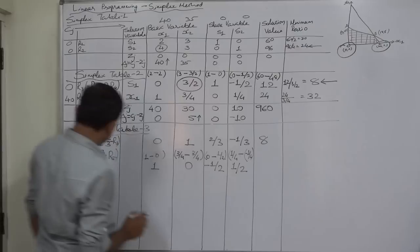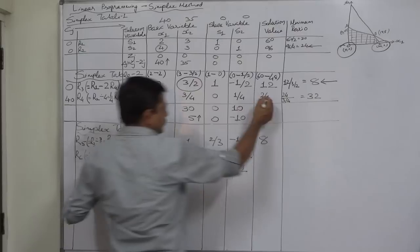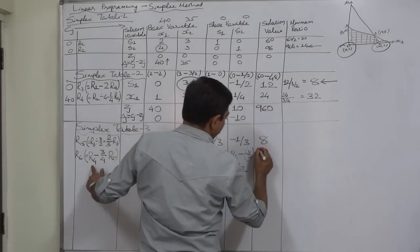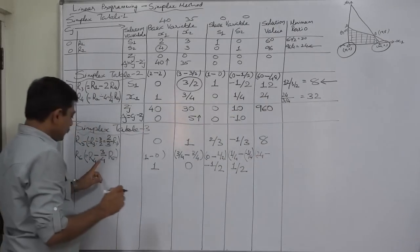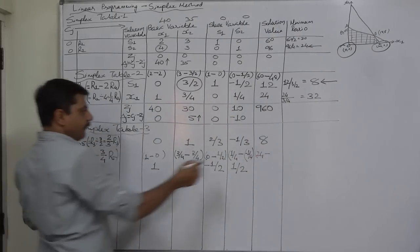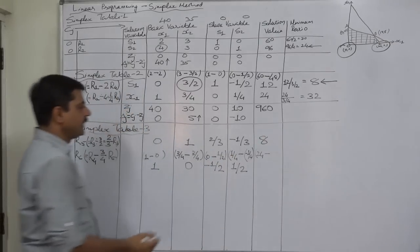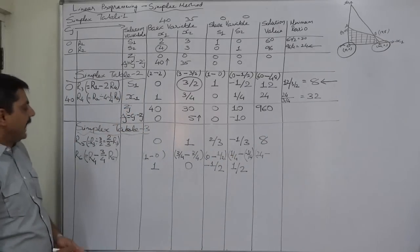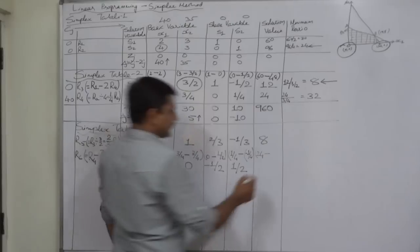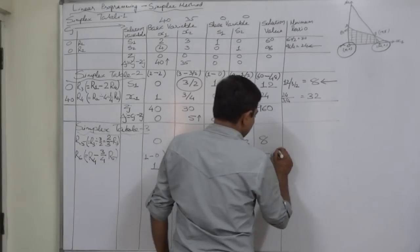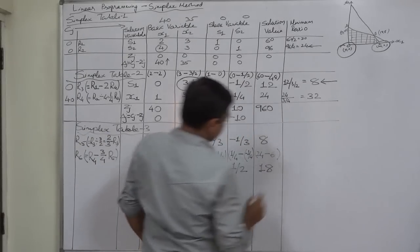The last value: R4 is 24, minus (3/4) × R5 value of 8, that is (3/4) × 8 = 6. So 24 − 6 = 18.